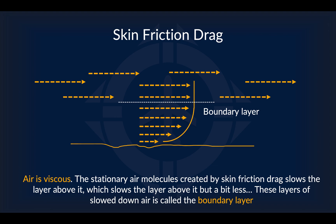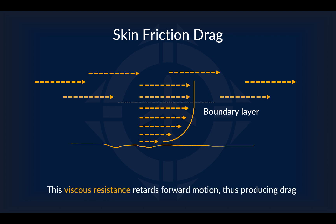One important thing to note is that air, like other fluids, is viscous — it acts in a sort of sticky way. The stationary air molecules created by skin friction drag slow down the layer above, which slows down the layer above that, but slightly less, and so on, until we return to the original speed of the wind. These layers of slowed-down air, caused by the viscosity of air affecting each other, are called the boundary layer. As molecules flow past the surface, the viscous resistance to that flow becomes a force which retards forward motion. With bigger airplanes, skin friction drag can be a big problem as the boundary layer covers almost all of the aircraft.